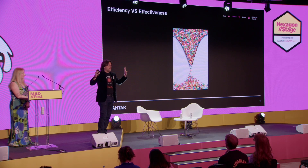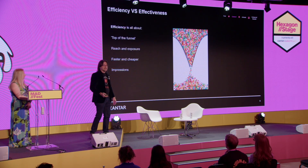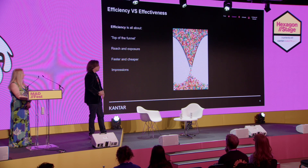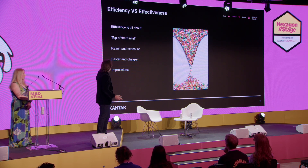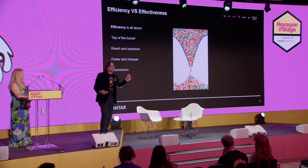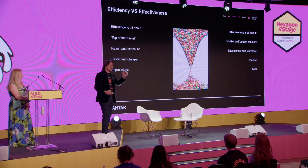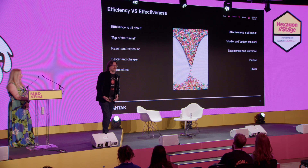The biggest dichotomy is between two key words: efficiency and effectiveness. Everyone knows about efficiency — top of the funnel marketing campaigns that try to increase reach and exposure, especially with digital which is fast and cheap and gets impressions very quickly. But if one million people see your ad and only one person clicks on it, did it go anywhere? That's where effectiveness comes in — thinking about the middle and bottom of the funnel, understanding how people engage, whether the ad is relevant, moving away from ad blindness toward more precision and considerate targeting.